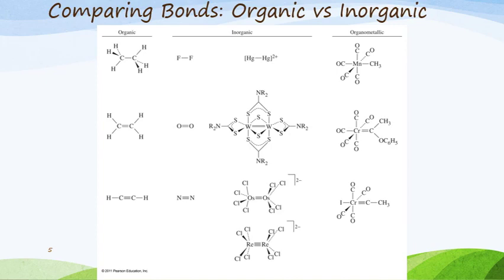I want to point out a few things. In the first column you'll notice the organic bonds — single bonds, double bonds, and triple bonds. If we look at inorganic species, you're going to see a wide variety of different types of bonds. For example, if I look at this particular one here, you will see that tungsten has six bonds — there are bonds here and bonds around it. It becomes very, very complex.